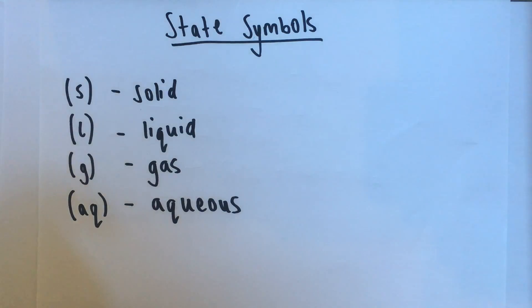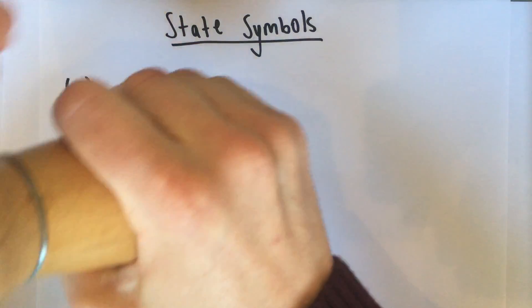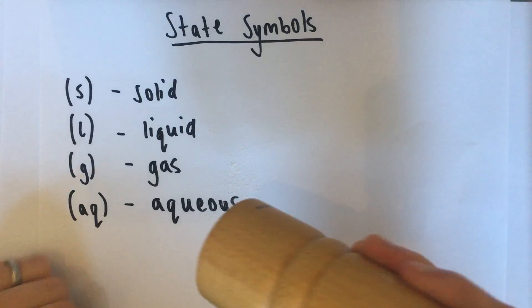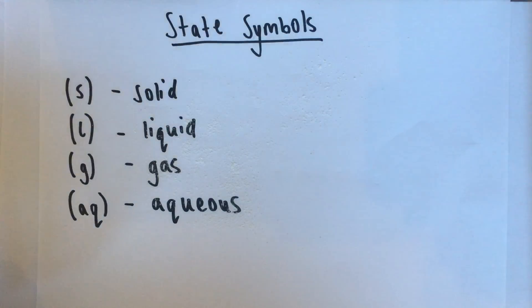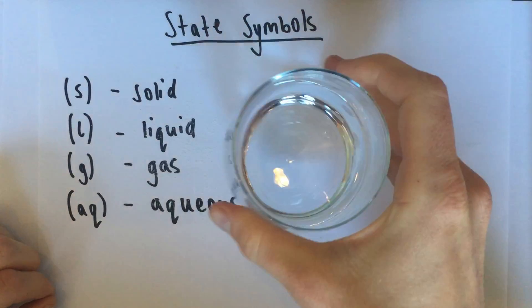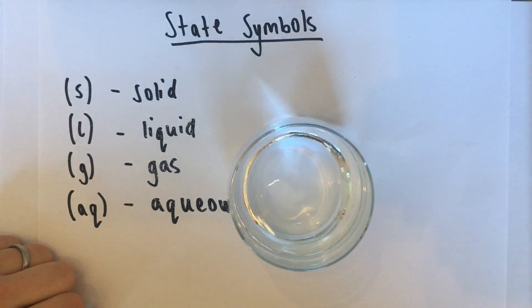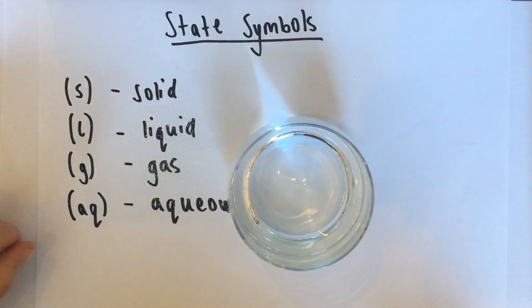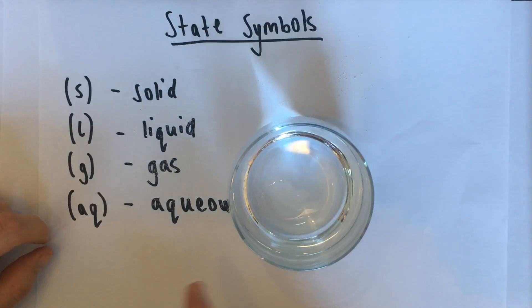So examples of all of them. Solid. That's some salt. It's a solid. Liquid. That's some water. It's a liquid. Gas is the air. I can't really show you that.